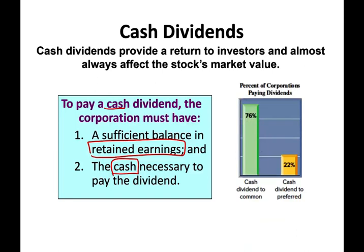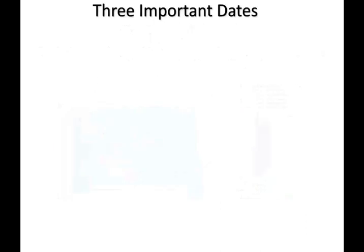Not all companies pay dividends. For example, 76 percent of companies pay cash dividends to common shareholders, and 22 percent pay another type called preferred dividends — but we won't focus on preferred stock in this session. Simply put, when a company decides to pay a dividend, we need to know about three important dates.